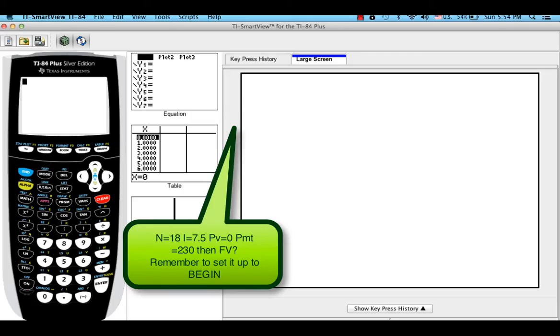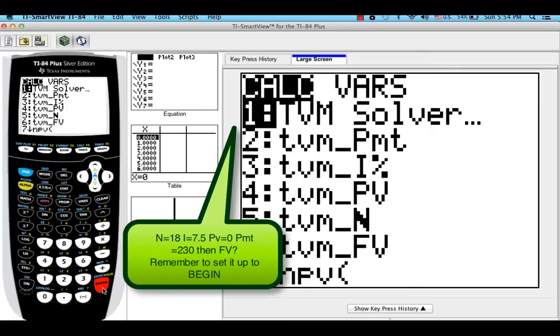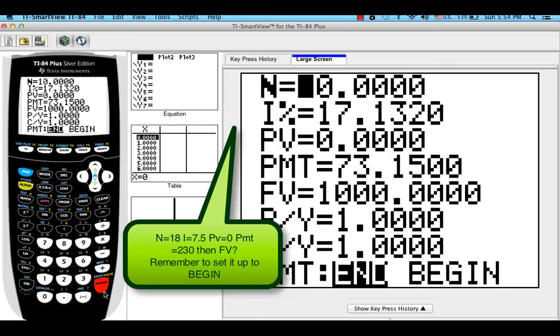Okay, so the first step is to click on Apps and then click on Finance. Now go ahead and click on TVM Solver. And we have all of this.